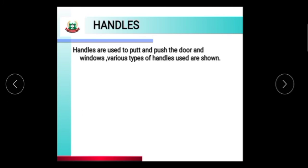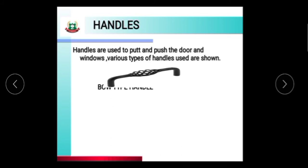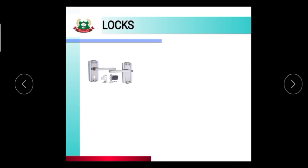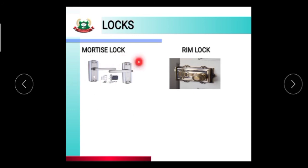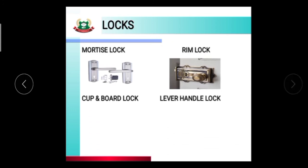Next are handles. Handles are used to pull or push the door or window. Various types of handles used are shown in the figure. Different handles are used for doors and windows. Next are locks — there are different types of locks generally used for doors: mortise lock, rim lock, cupboard lock, and lever handle lock.